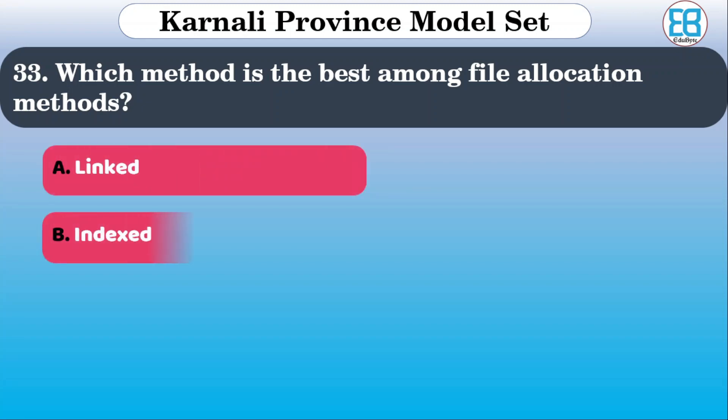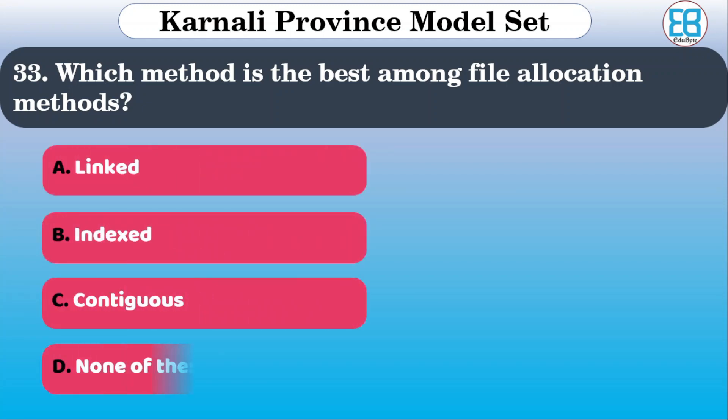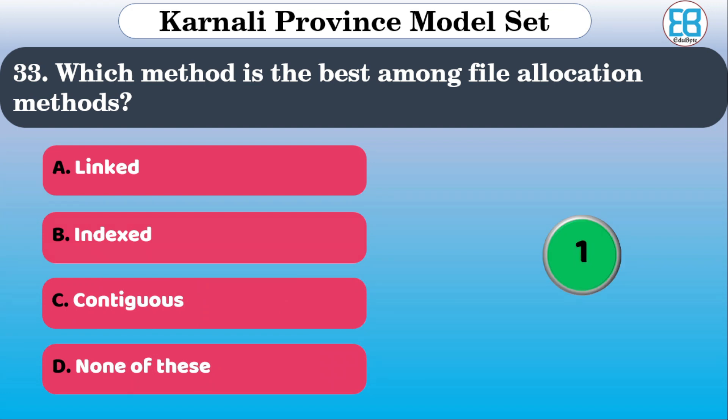Which method is the best among file allocation methods? The options are: linked, index, continuous. The correct option is indexed.